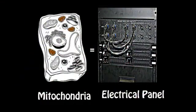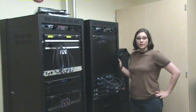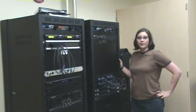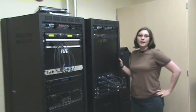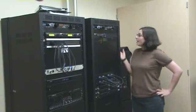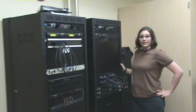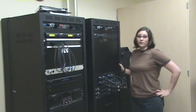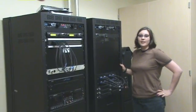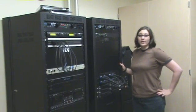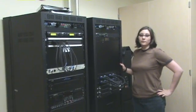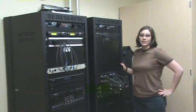The mitochondria of a cell are like an electrical panel. Mitochondria are structures within a cell that convert sugar into energy. This electrical panel is a lot like mitochondria because it converts stored energy into electric kinetic energy.